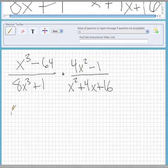To factor the first one, this is a difference of cubes, so it's going to be the cubed root minus the other cube root, x, and the cube root of 64 is 4.